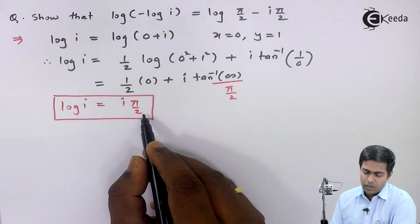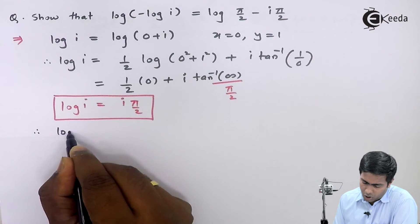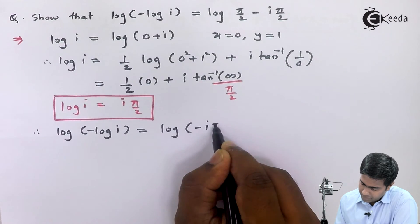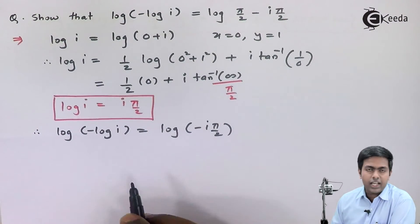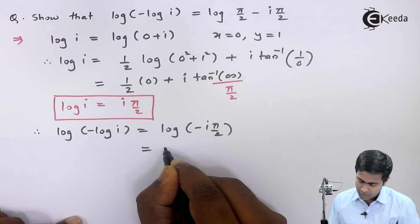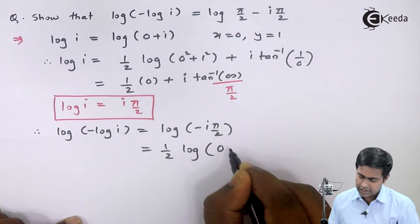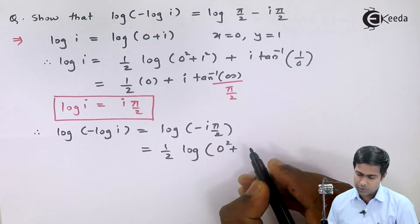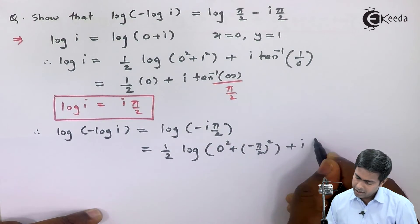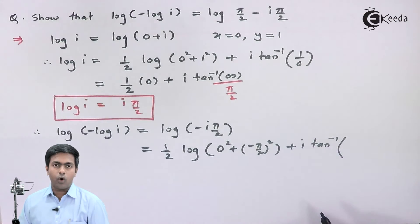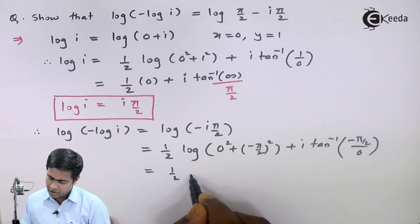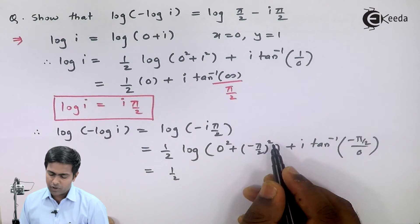Now we use this value in the left hand side. Therefore, log of minus log i becomes log of minus i pi by 2. Once again we have to find the log of a complex number. Here x equals 0 and y equals minus pi by 2. So this becomes one half log of 0 squared plus minus pi by 2 the whole squared plus i tan inverse of minus pi by 2 divided by 0. The square of pi by 2 is pi squared by 4, so inside the log we have pi squared by 4.